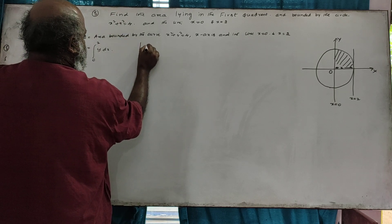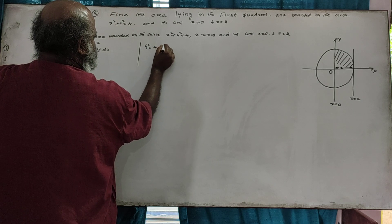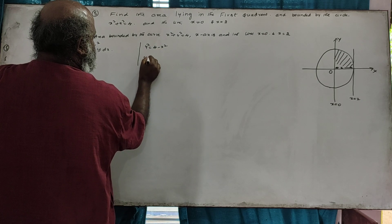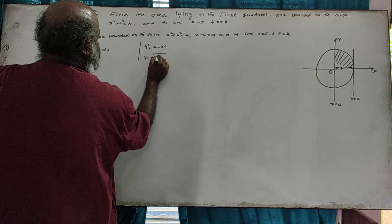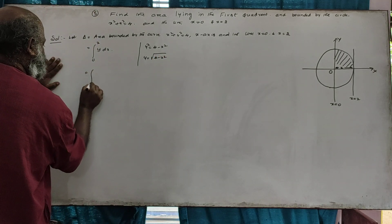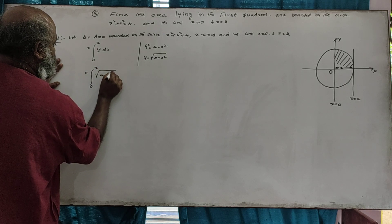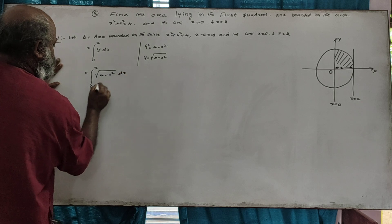Here, y squared equals 4 minus x squared, so y equals the square root of 4 minus x squared. That means we have the integral from 0 to 2 of square root of 4 minus x squared dx.